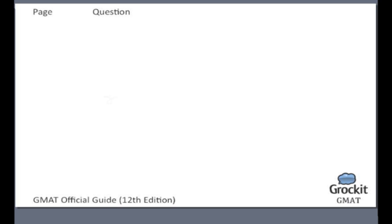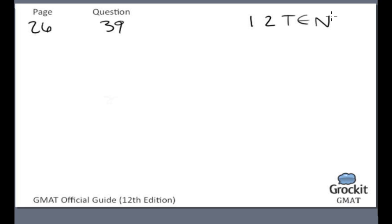Welcome to Grokett's OGTV GMAT edition, where we go through every question in the official guide, give you the answers and explanations, and show our work. My name is Jim Jacobson, and we are going to pick up where we left off last time on page 26 with question number 39 in the data sufficiency questions. On the real GMAT, you may run into things you've never seen before, so it's always valuable to have answer choices crossed off so that if you have to guess, you can improve your odds by not accidentally choosing something you've logically eliminated.